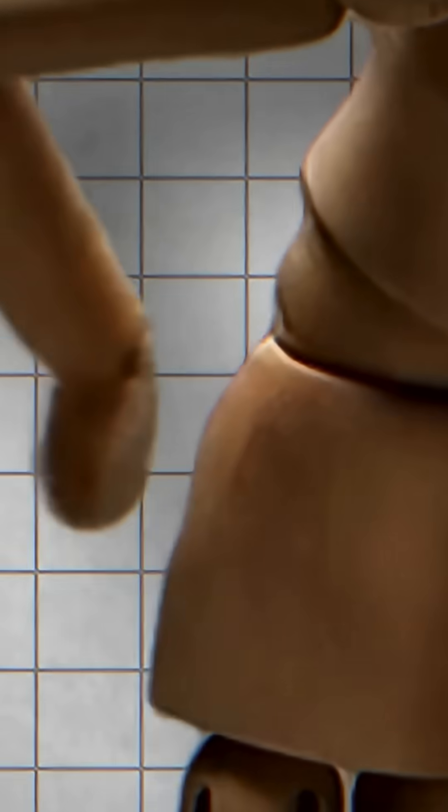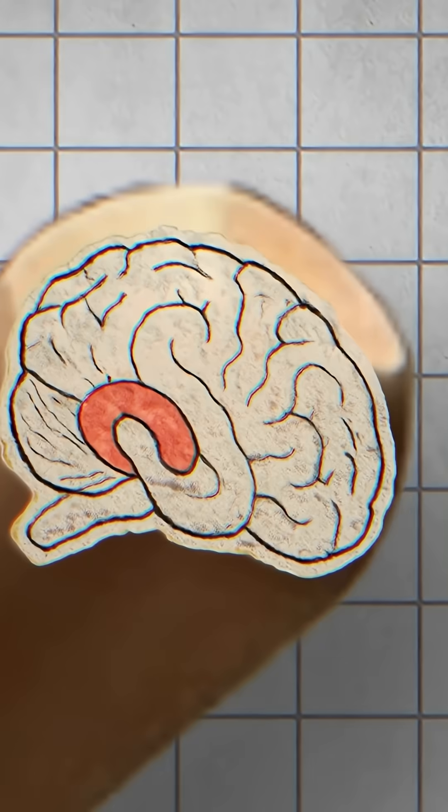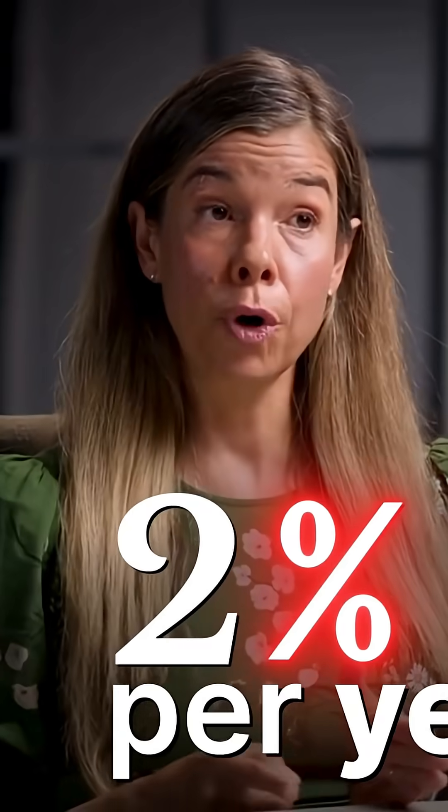So for example, as we age, certain areas of the brain which is involved in learning and memory starts to shrink by about 1 to 2% per year.